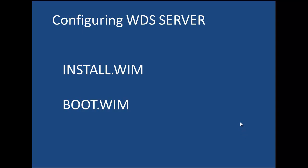One of the first two things that you want to do is to install the install.wim file and add the boot.wim file to the WDS server. Before we add these two files, let's talk about them. The install.wim is really the operating system. You're going to find this file within the sources directory, and you will also find the boot.wim file in the sources directory.